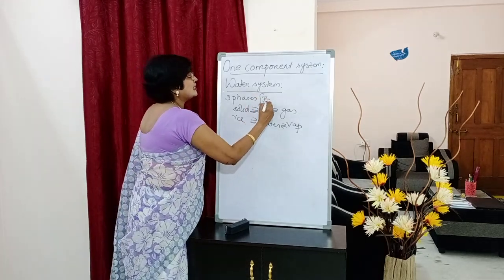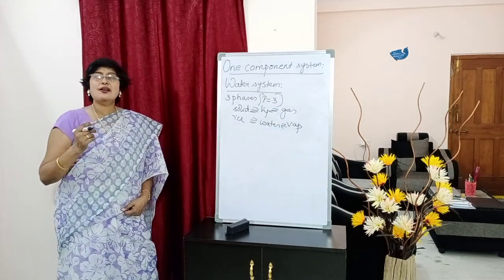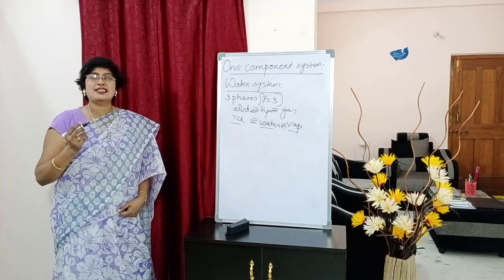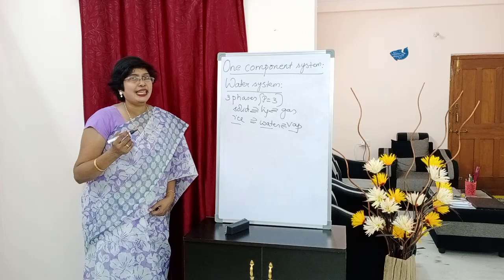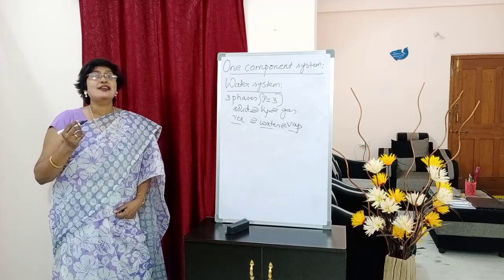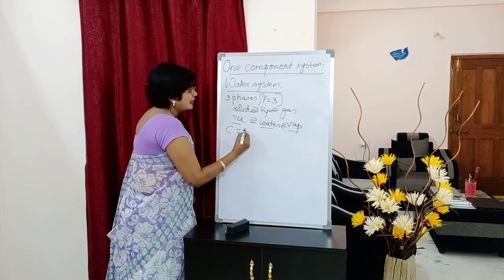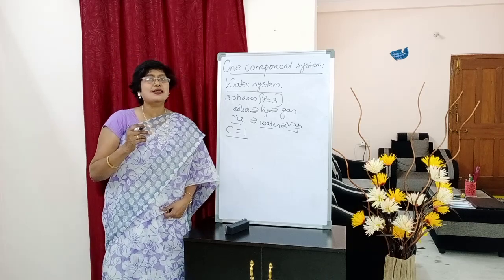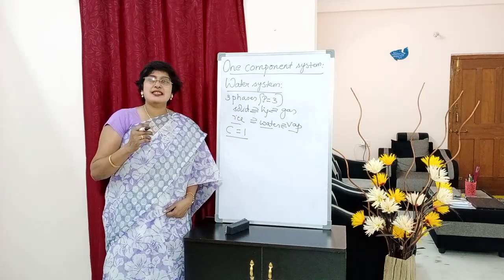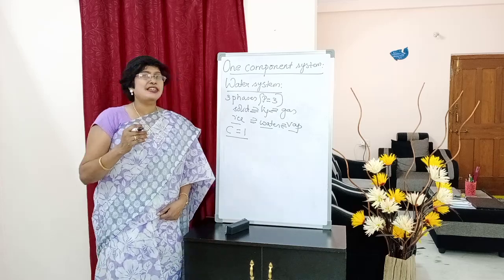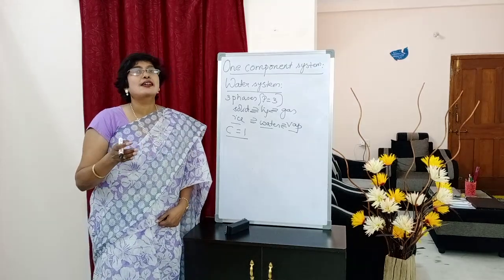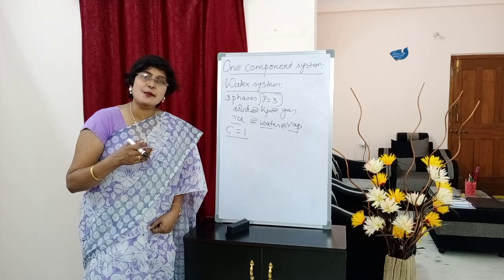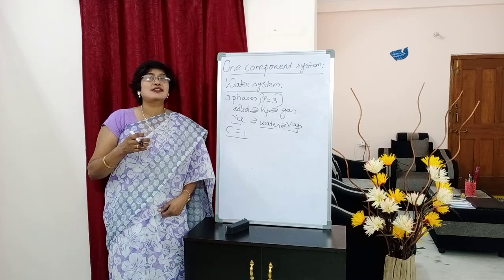Here P is equal to 3. In order to explain the composition of all three phases of the water system, we need only one chemical, that is H2O. Therefore, water system is a one component system. To explain the ice phase, water phase, and vapor phase, the formula is H2O in all cases. Hence, it is a one component system and can exist in three phases.